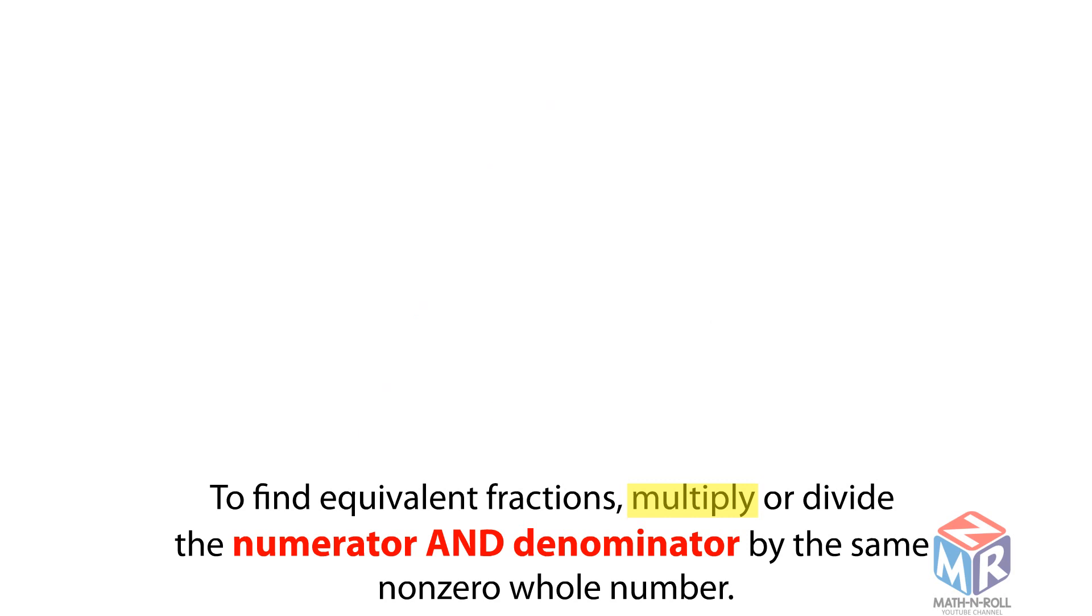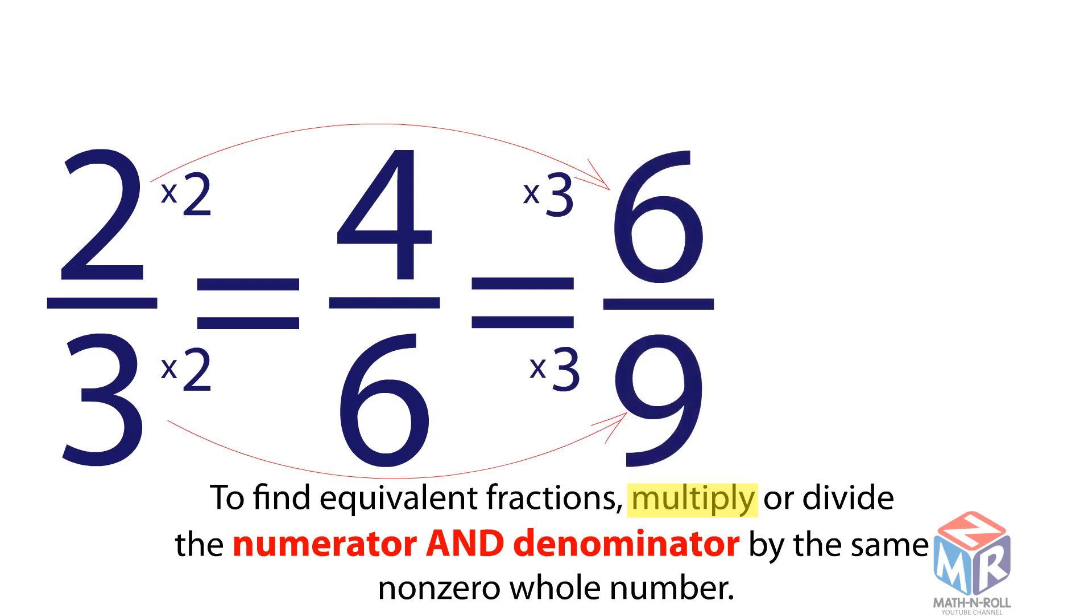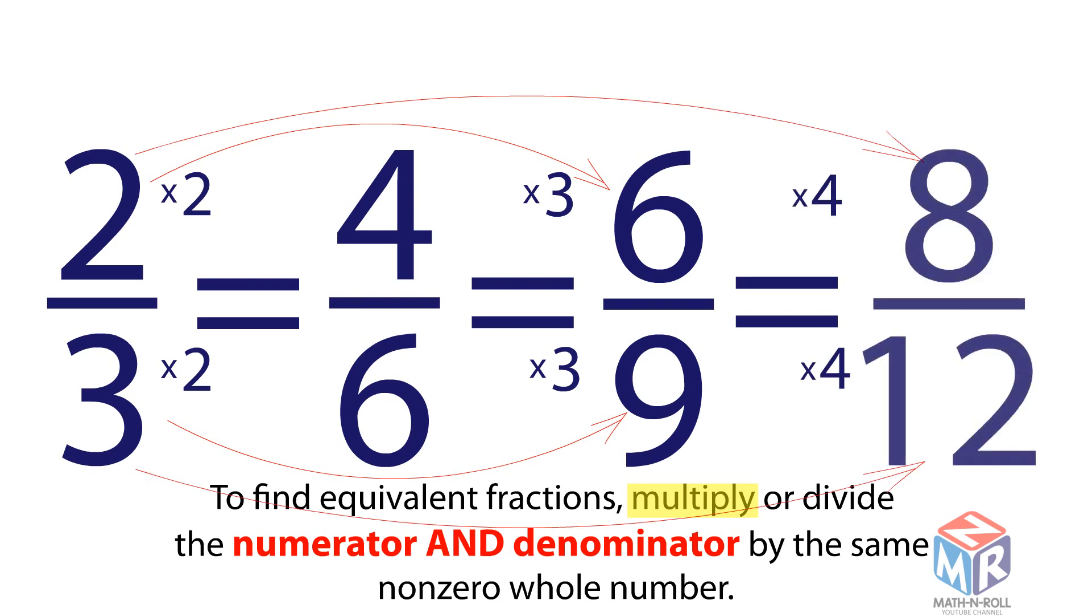Let's look at multiplication to find equivalent fractions. Let's take a look at 2 thirds. To get 4 over 6, we multiply both the numerator and the denominator by 2. To get 6 ninths, we multiply the numerator and the denominator by 3. And to get 8 twelfths, we multiply both the numerator and the denominator by 4.